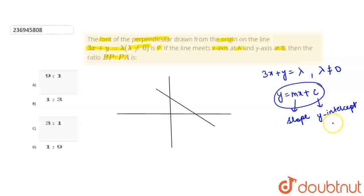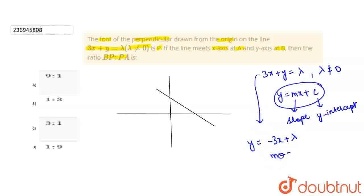y-intercept मतलब जो point जहाँ पे जो curve है या जो line है वो y-axis को cut करती है। तो अगर हम इस equation को इस form में लिखें: y = −3x + λ। यानि slope क्या आ गई? minus 3. अब slope negative में है, तो x-axis के साथ line का जो angle बनेगा वो obtuse बनेगा। इसलिए line ऐसे जा रही है।